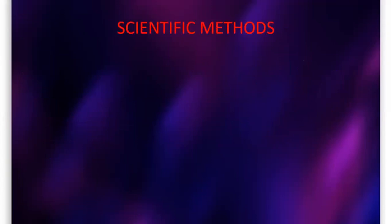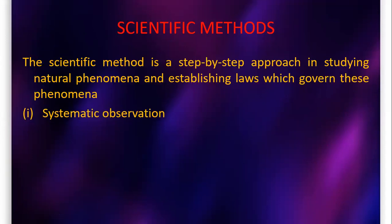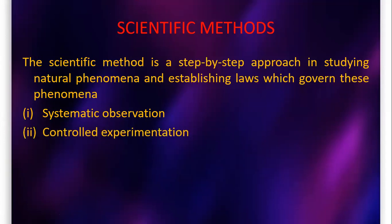Now the scientific methods. The scientific method is a step-by-step approach in studying natural phenomena and establishing laws which govern these phenomena. The scientific method involves the following features: the first is systematic observation — observing something systematically; the second is controlled experimentation — doing experiments in a controlled manner.